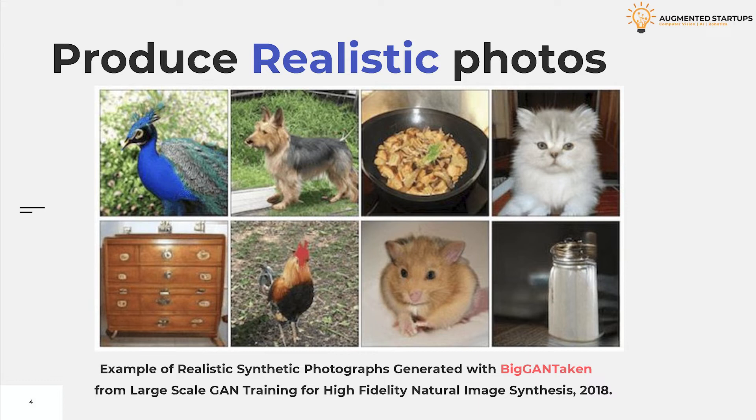It is possible to enforce stability by strongly constraining the discriminator, but doing so incurs a dramatic cost in performance. With current techniques, better final performance can be achieved by relaxing these constraints and allowing collapse to occur at the later stages of training, by which time a model is sufficiently trained to achieve good results.